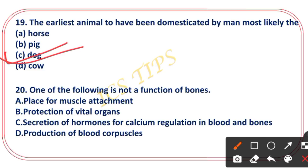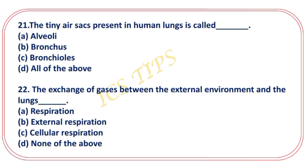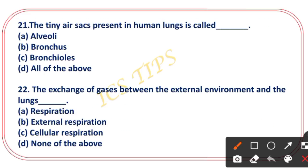Which of the following is NOT a function of bone? Option A: providing muscle attachment. Option B: protection of vital organs. Option C: secretion of hormones for calcium regulation in blood. Option D: production of blood corpuscles. The right answer is option C — secretion of hormones for calcium regulation is not a function of bone.